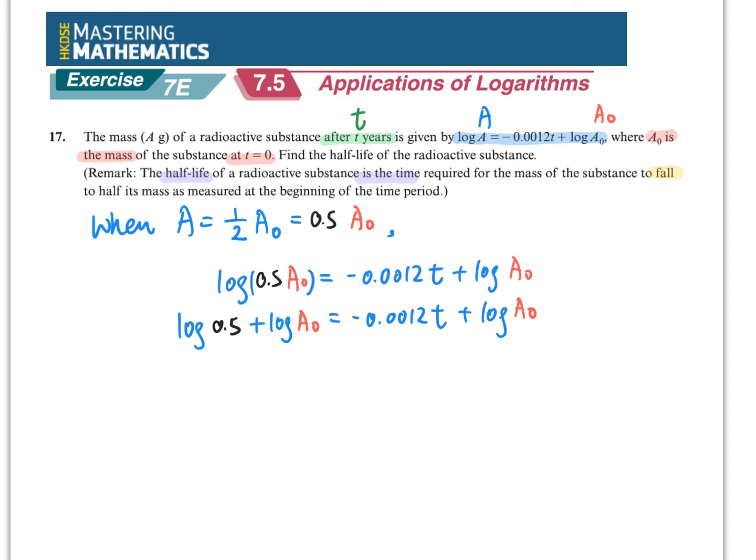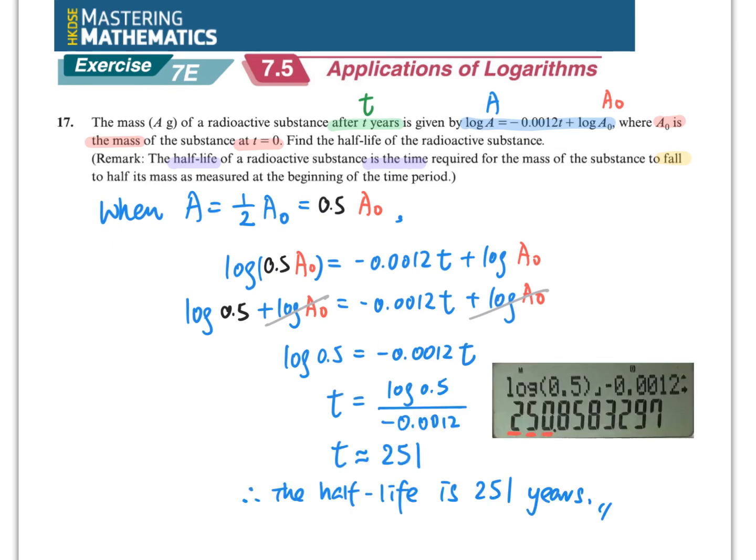那就是講一個t的。只要稍稍對log有認識的人都知道被log數相乘等於兩個log數相加。下一步呢,就是左右手一起減掉了log a0,那就只剩下log 0.5等於-0.0012t。那除了那個數過去,就算到那個t。除完取了三位數字就是251。